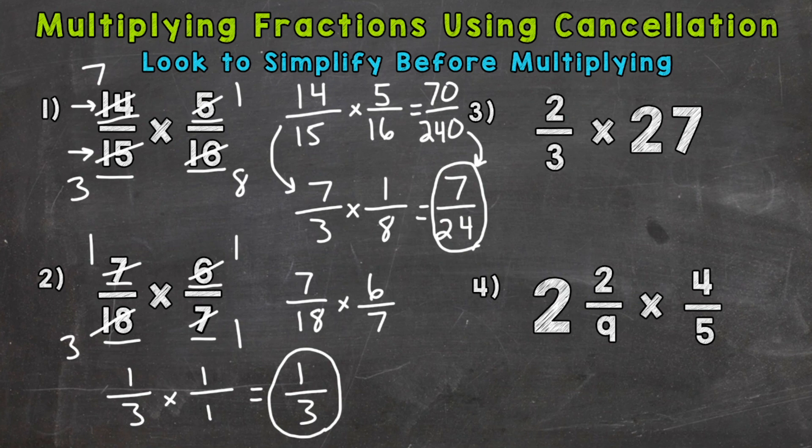What we need to do here is we'll write 2 thirds. And we need to make 27 into a fraction so we have a numerator and a denominator. And all we need to do if we have a whole number, we put it over 1. And that's equivalent to 27. We didn't change the value of 27. We just converted it to a fraction where we have a numerator and a denominator. So let's see if we have any common factors between our numerators and denominators.